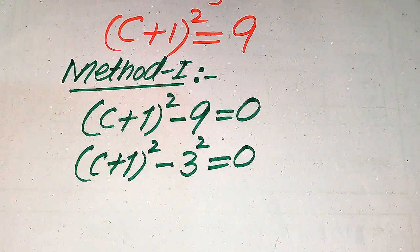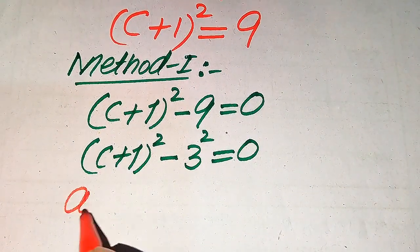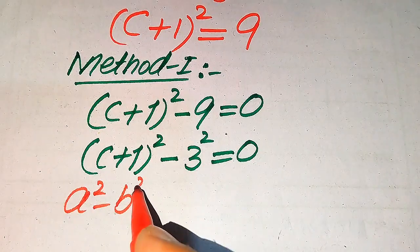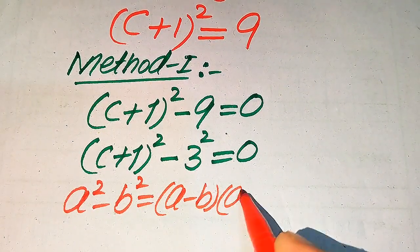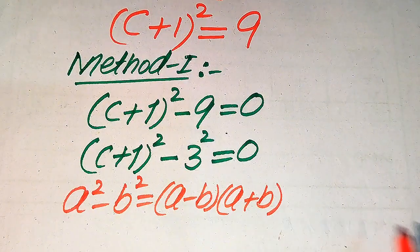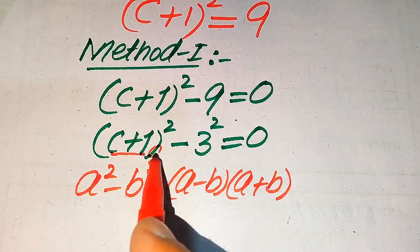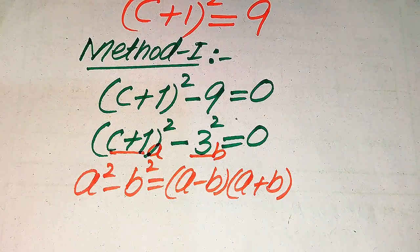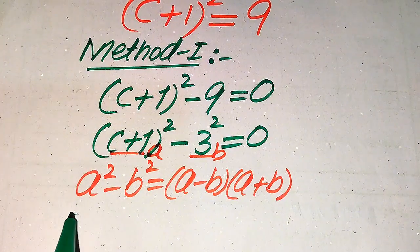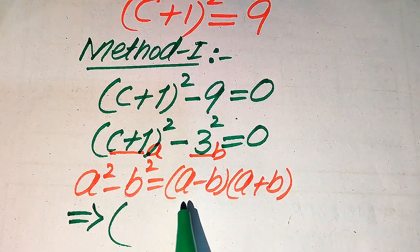Here we solve this problem with the help of the algebraic formula: a² − b² = (a − b)(a + b). According to this formula, the base of the first term is our a and the base of the second term is our b. Now we apply this formula to our equation.